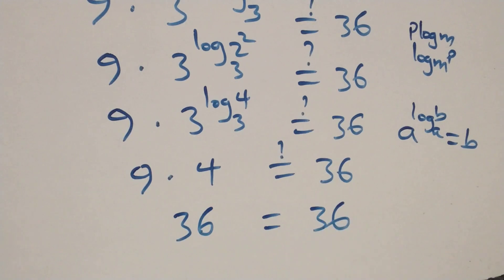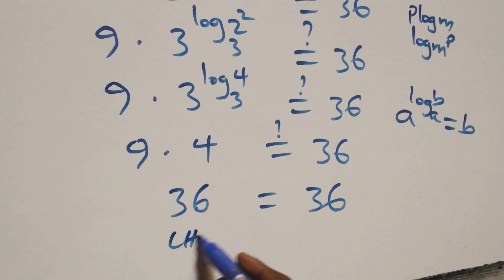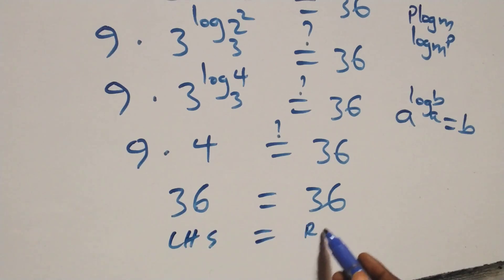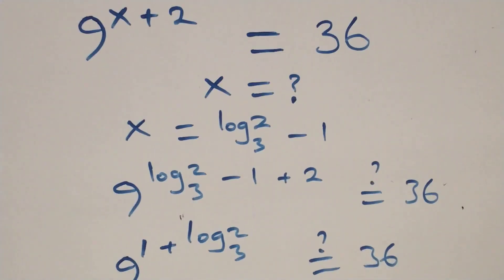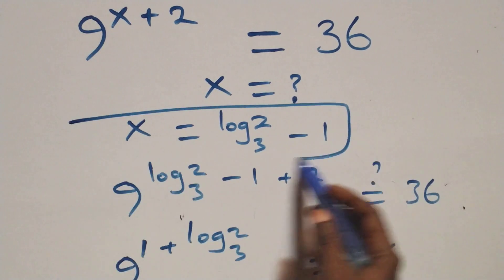Hence, we have the left-hand side equal to the right-hand side, and we conclude that x equals log 2 base 3 minus 1 satisfies this problem.